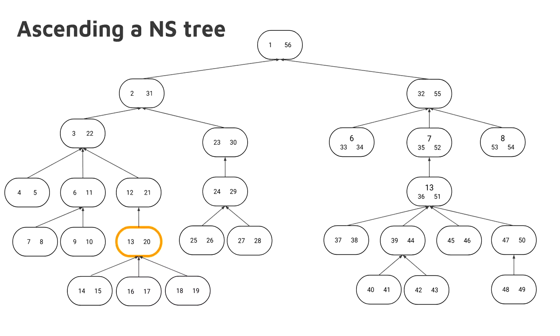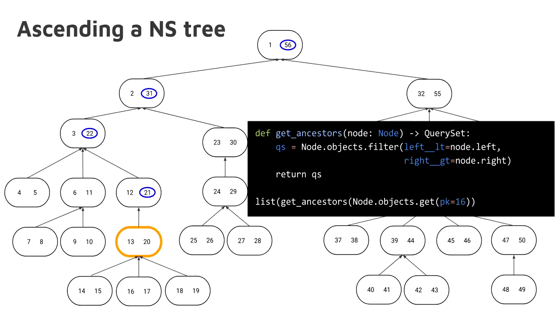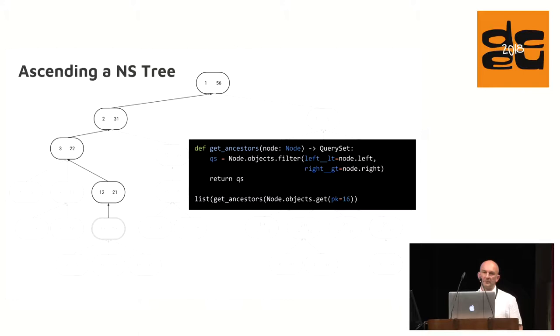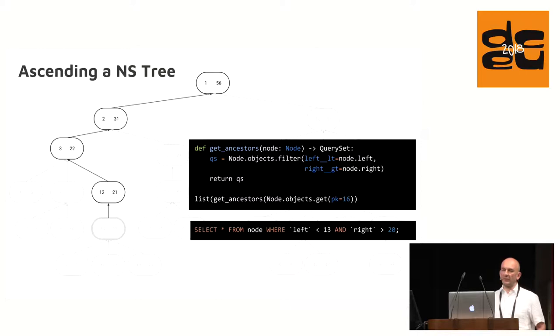We want to find the ancestors of the highlighted node. First we check the left and right values of that node. We know that the left value of all ancestors must be smaller than our node's left value. We also know that the right value of all ancestors must be greater than our node's right value. This Python function returns a query set of all ancestors. With these two values we can narrow down the query using a simple comparison. And again we get the expected query set. For ordering we could either use the left or right value. And here for completeness, the simplified SQL statement for that query.